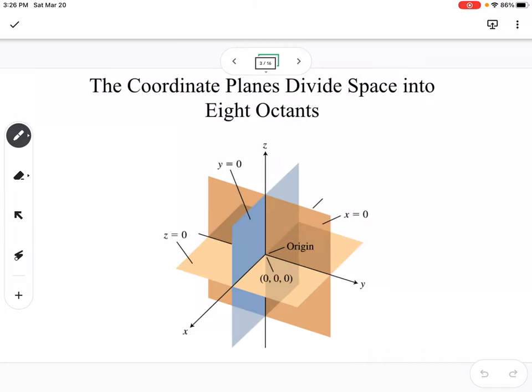You can see there are eight different spaces, so eight octants that are created by the coordinate planes. Instead of having just your xy-axis and having four quadrants, we now have eight octants since we're adding in a whole other dimension.